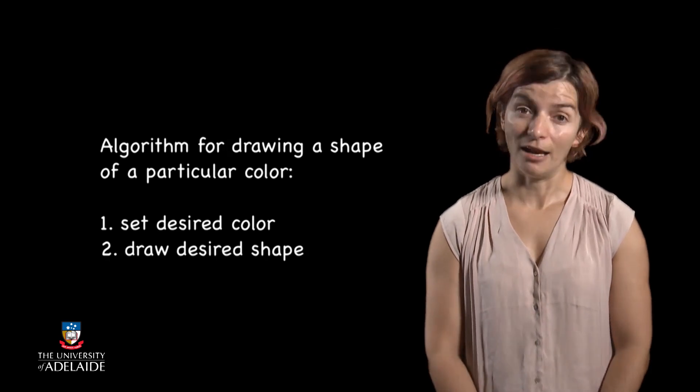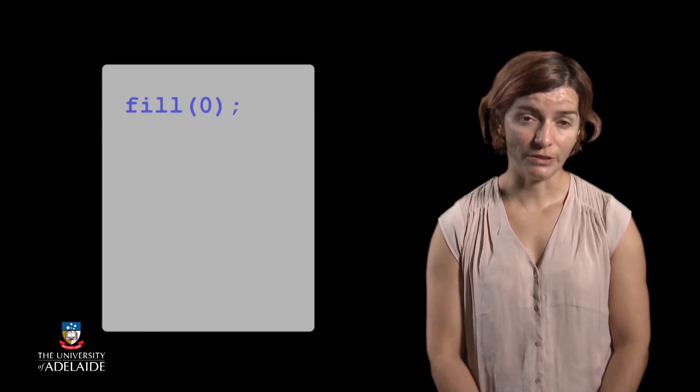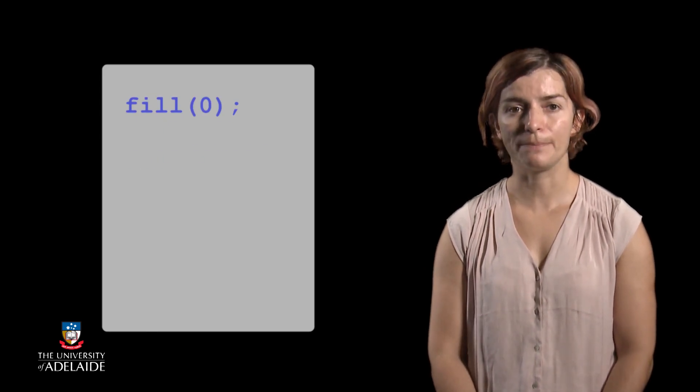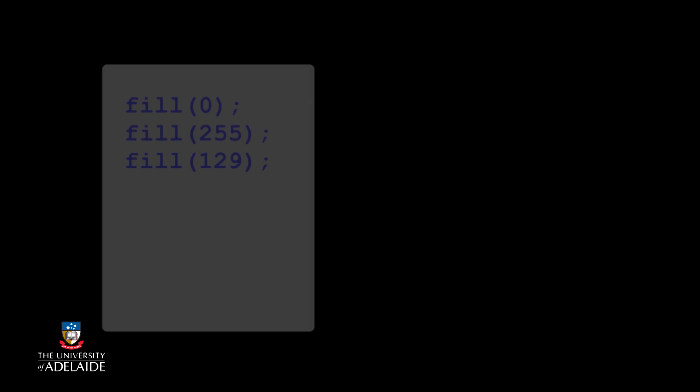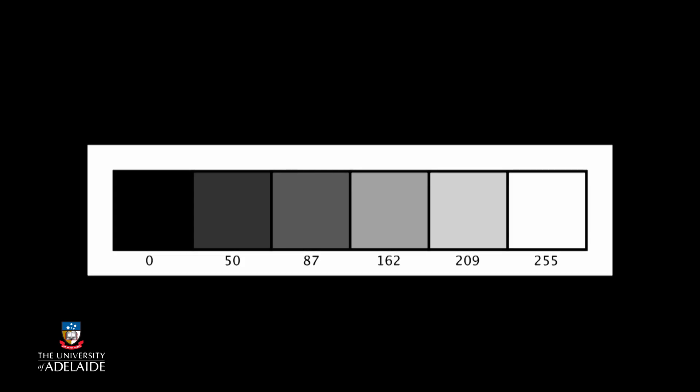Let's find out how to set the color of a shape. This is very easy in processing, as it has a function that defines the color that a shape will be filled with. The function is called fill, and it takes as a parameter a number from 0 to 255, where 0 represents black and 255 represents white.